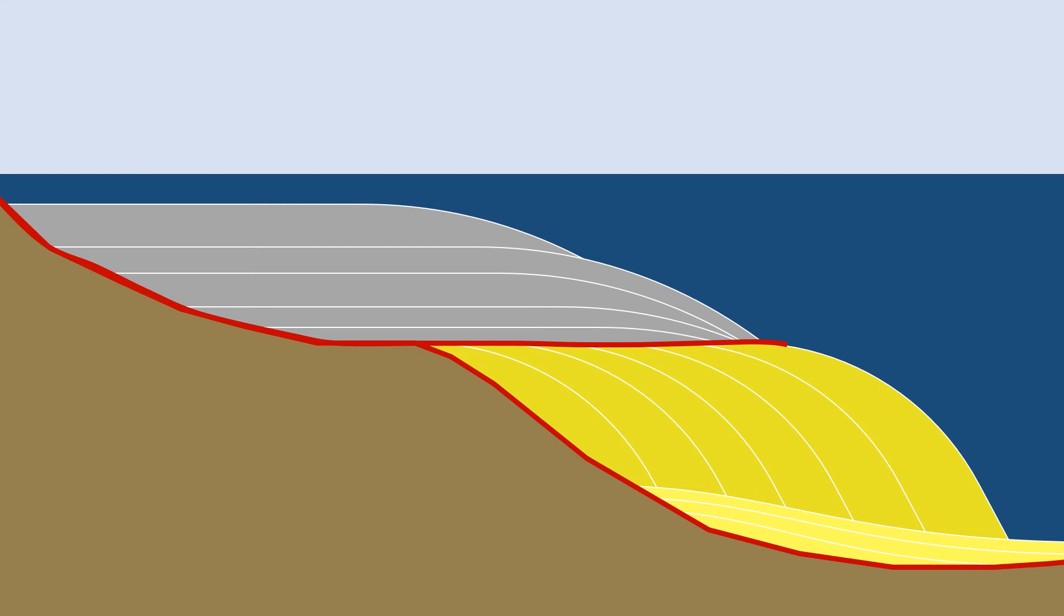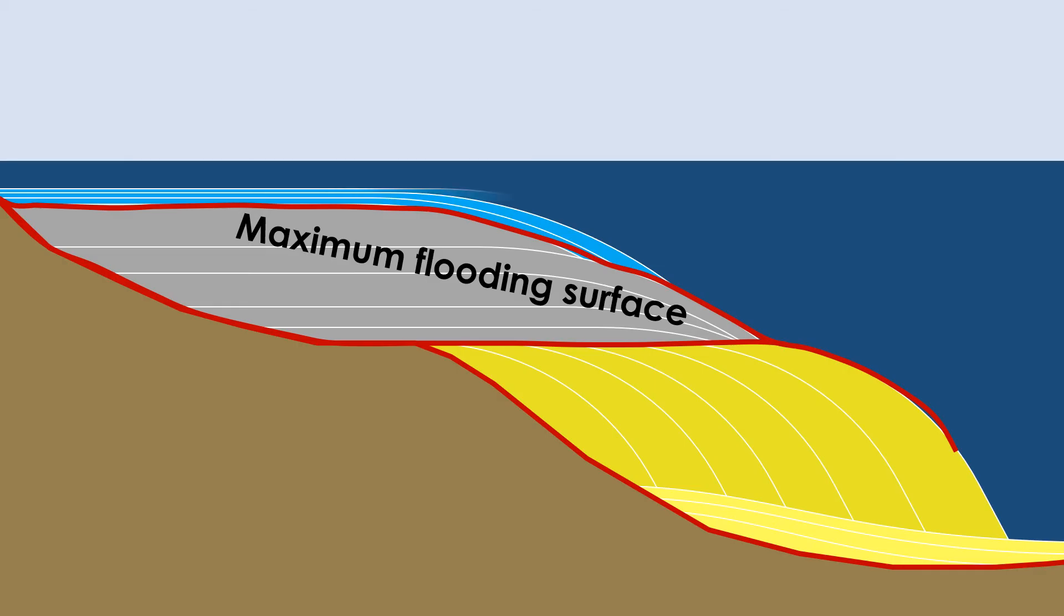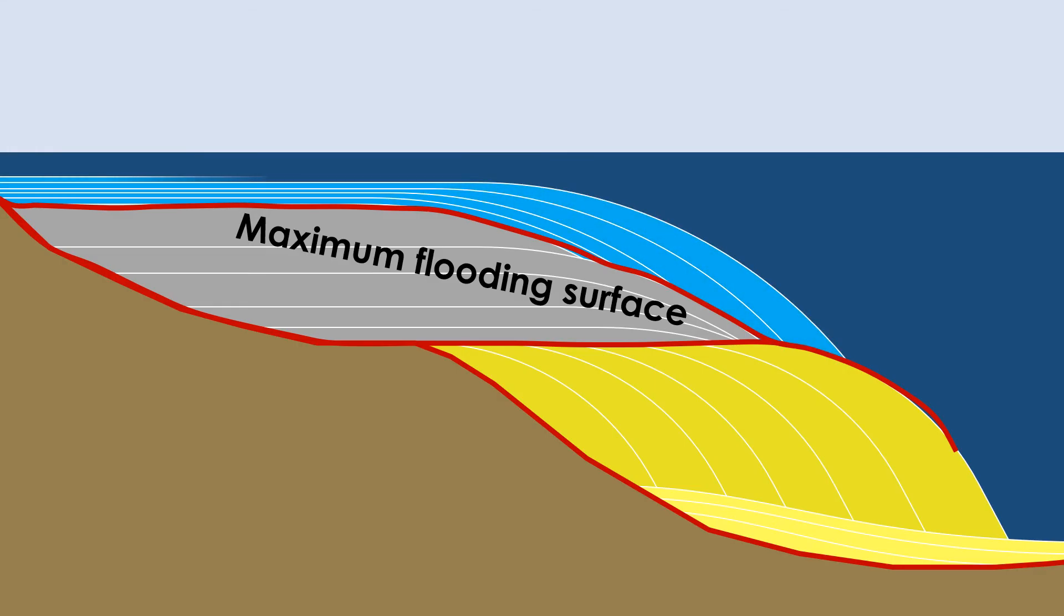Over time, the rate of sea level rise slows down because accommodation space is getting filled by sediment. At this point, the sedimentary layers are getting deposited on top of a maximum flooding surface, which marks the deepest water facies as well as the furthest landward extent of the shoreline. Again, the sediment supply outpaces the creation of accommodation space, so the facies shallow upward and prograde out toward the open sea. We refer to these strata as the highstand systems tract.